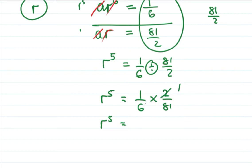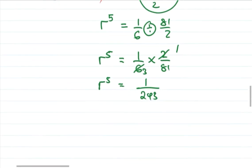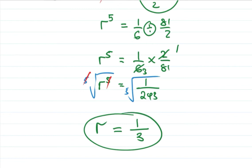2 times 1 in the numerator is 2, and 6 times 81 gives us 1 over 243. So r⁵ = 1/243. Now we take the fifth root of both sides. The fifth root and the power 5 cancel, and the fifth root of 243 is 3. So this is the common ratio: r = ⅓.